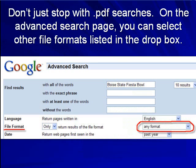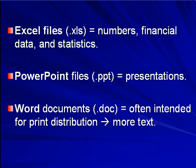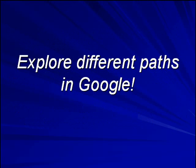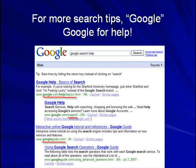But don't just stop with PDF searches. On the advanced search page, you can select other file formats in the drop-down box. For example, you can search Excel files or XLS files, and those are spreadsheets containing numbers, financial data, and statistics. PowerPoint files are, of course, presentations. And Word documents are often intended for print distribution and contain more text than some web pages. So you could explore different paths in Google. For more search tips, Google.